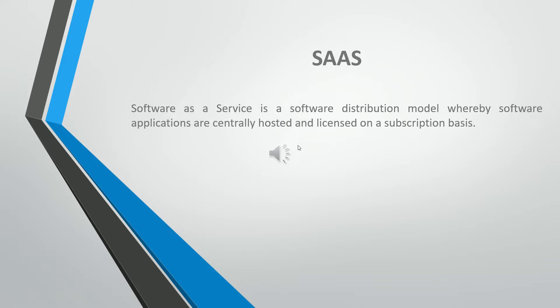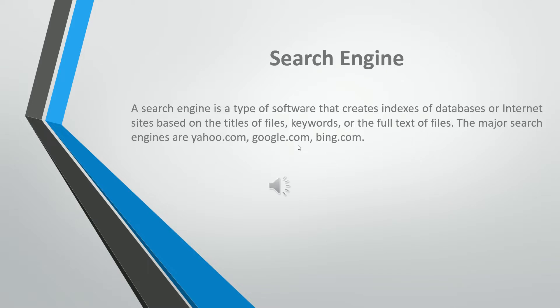Software as a Service (SaaS) is a software distribution model whereby software applications are centrally hosted and licensed on a subscription basis. A search engine is a type of software that creates indexes of databases or internet sites based on the titles of files, keywords, or the full text of files. The major search engines are yahoo.com, google.com, and bing.com.